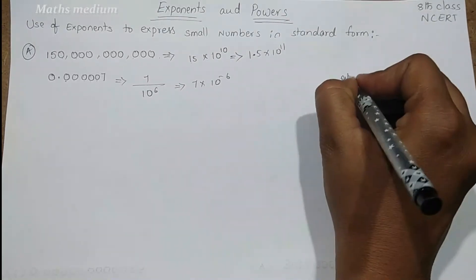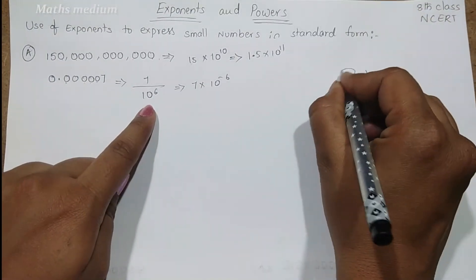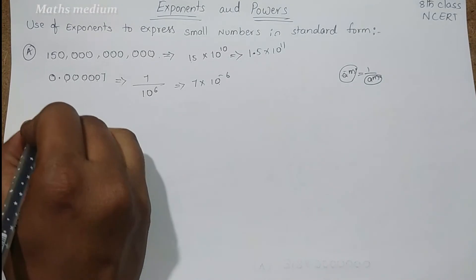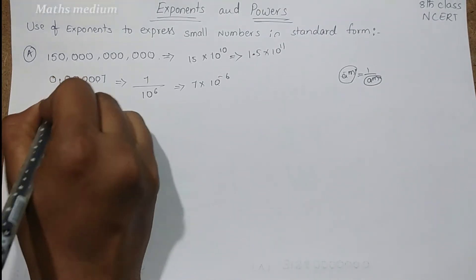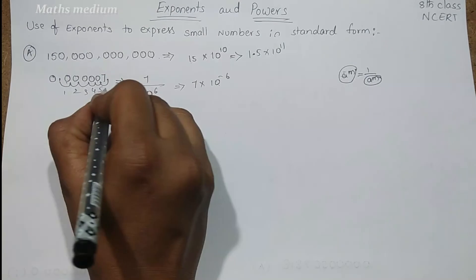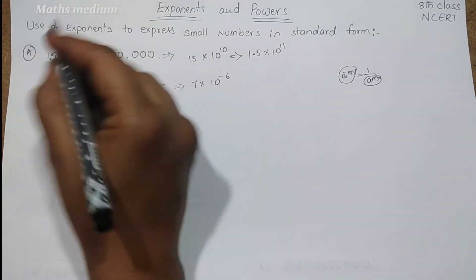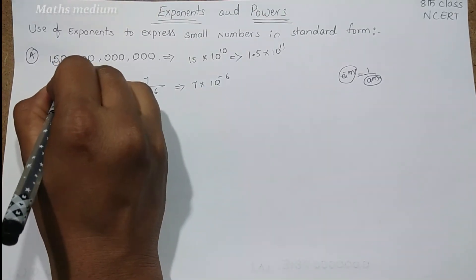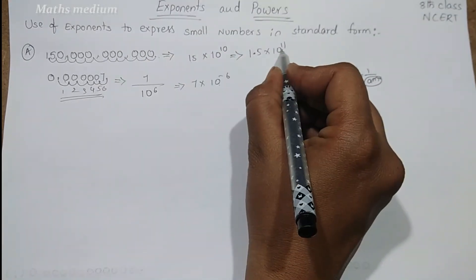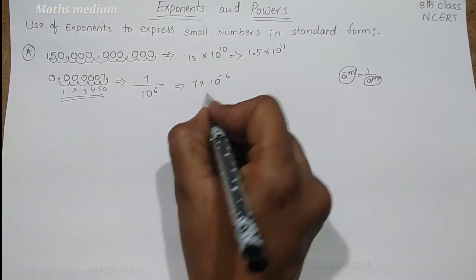Why minus 6? Because a power minus m is equal to 1 by a power m. So 1 divided by a power m can be written as a power minus m like this. Now there is one difference here — the decimal point is moved 6 places, that's why we take 10 power 6. Here also, for the larger number, the decimal point moves left to right 11 places, giving 10 power 11. So we get the answer in standard form.